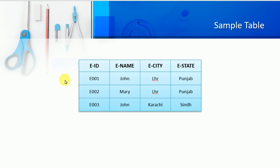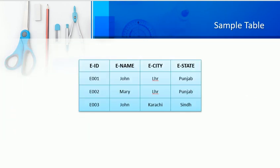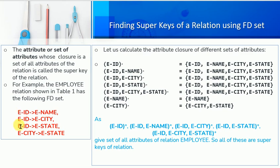The example we have discussed is a relation with attributes employee ID, employee name, employee city, and employee state. The functional dependencies are: if we have employee ID then we can determine employee name; employee ID determines employee city; and employee ID determines employee state.